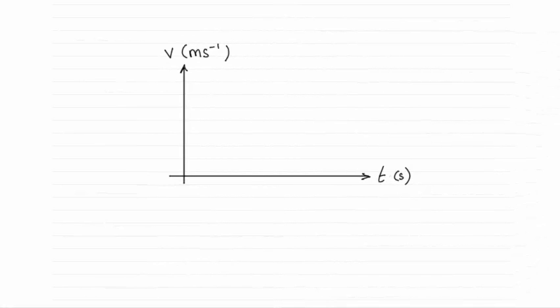Hi there. Now what we need to do is sketch a speed-time graph for the motion of the train between the two stations A and B. And it's a fairly straightforward question.